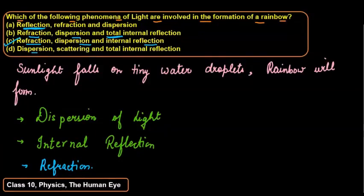Whereas the last one is dispersion, scattering, total internal reflection - it is not correct. So here it's clear that the correct answer is option C for rainbow formation.